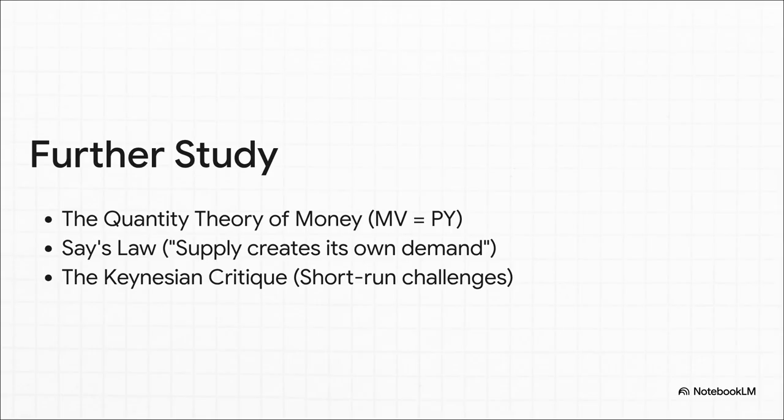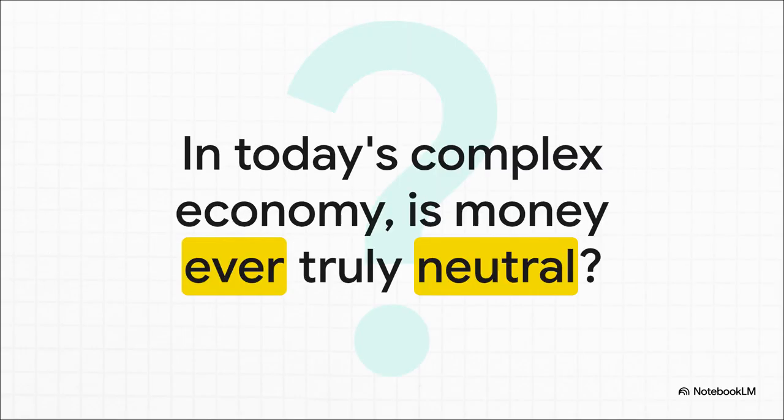If you really want to level up your understanding, there are a few places to go next. First, check out the quantity theory of money — that classic MV equals PY equation. Then there's Say's Law. But honestly, the most important thing to look at next is the Keynesian critique. Keynes basically said that in the real world, things like wages are sticky — they don't change overnight. Because of that, changes in the money supply can and do affect real things like jobs and output, at least in the short run.